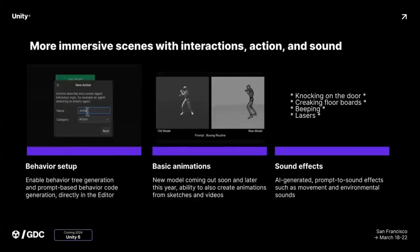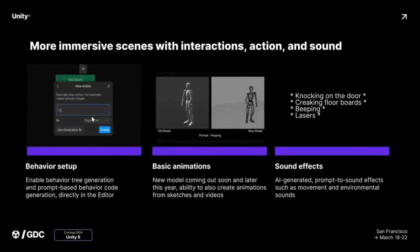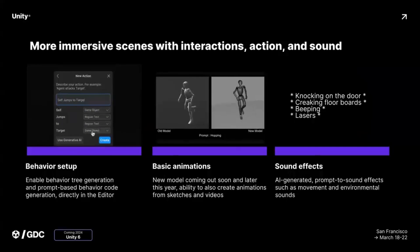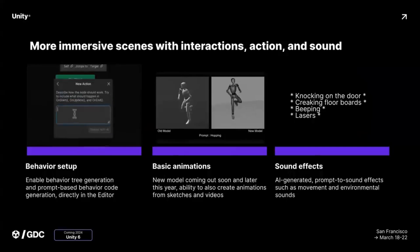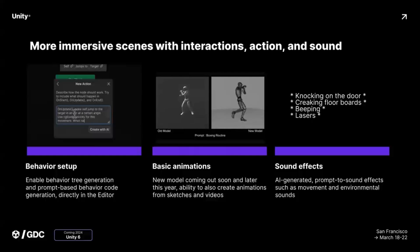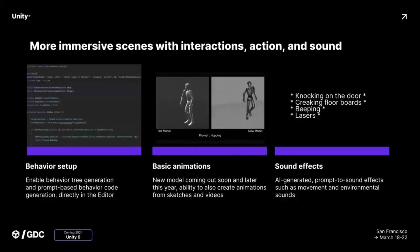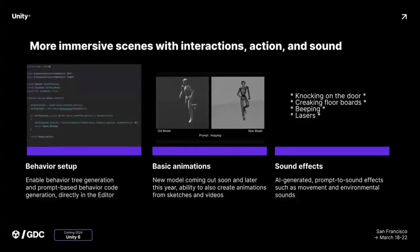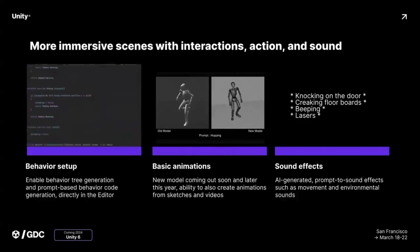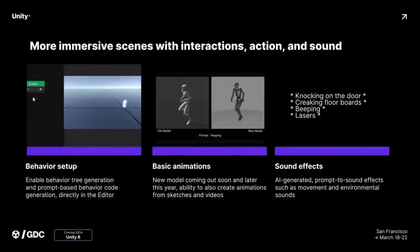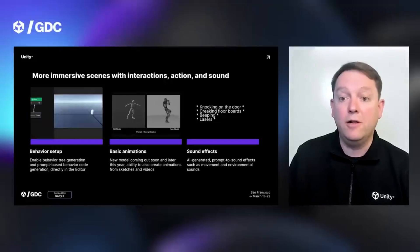There's also Muse Behavior for creating decision trees from prompts — basically, this can create animations and animation states from a text prompt or even sketches. You'll also be able to create sound effects from text prompts. But these are all future features, and none of them are there yet, and they all have me a little skeptical.